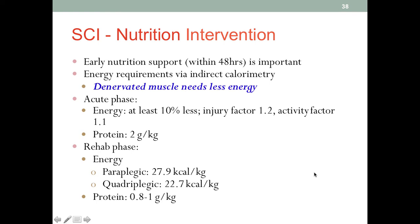Early nutrition support is very important for spinal cord injury patients — by early, we mean within the first 48 hours. Due to the nature of the injury, the energy needs of the patient will differ from a similar individual without spinal cord injury because the denervated muscle needs less energy. When muscle no longer has conscious control from our nerves, it doesn't need as much energy.